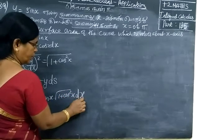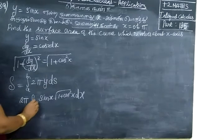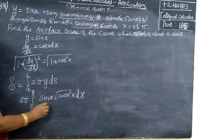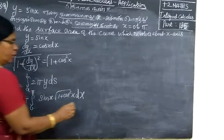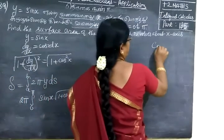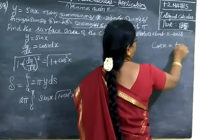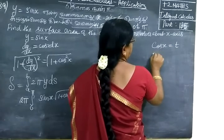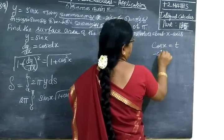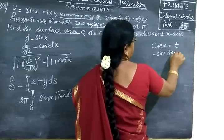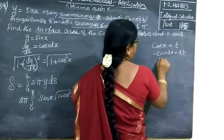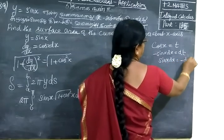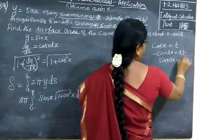For y we write sin(x), then for ds we write root of 1 plus cos²(x) dx. The limit is 0 to π. Now put cos(x) equal to t — this is the substitution. Differentiating, minus sin(x) dx equals dt, or sin(x) dx equals minus dt.